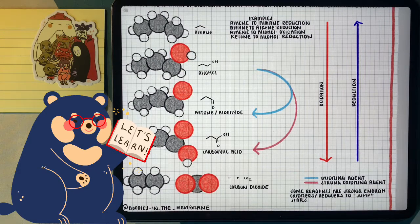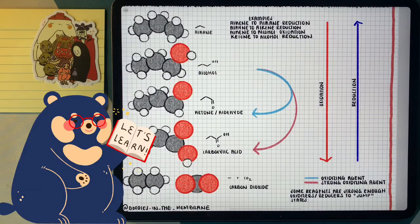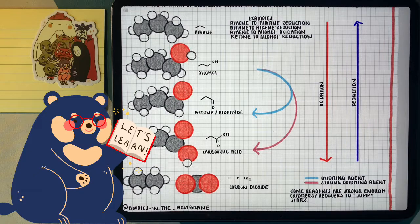So as we go from an alcohol, carbonyl, carboxylic acid, and CO2, those are oxidative steps. And the reverse going from a ketone aldehyde to an alcohol and an alcohol to a hydrocarbon, those are all reductive processes.